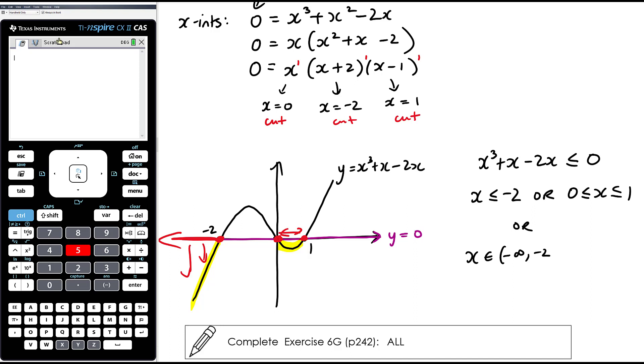We could write that in set notation if we wanted. So we could say x is an element of negative infinity to negative 2, square bracket, union 0 to 1, square bracket. Either notation is fine in terms of answering this particular question.